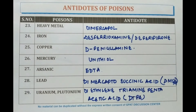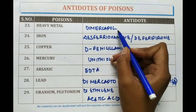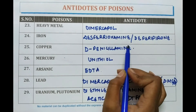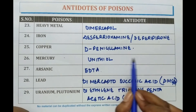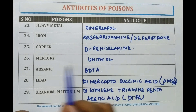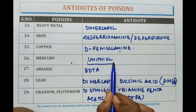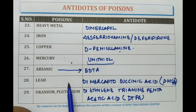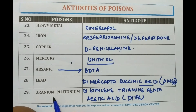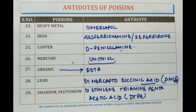Let's revise: For heavy metal poisoning, dimercaprol is given. For iron, desferrioxamine or deferiprone is given. For copper poisoning, D-penicillamine is provided. For mercury poisoning, unithiol is suggested. For arsenic poisoning, EDTA is given. For lead poisoning, dimercaptosuccinic acid is suggested. For uranium or plutonium, diethylene triamine pentaacetic acid is suggested. That's all for antidotes in case of poisoning.